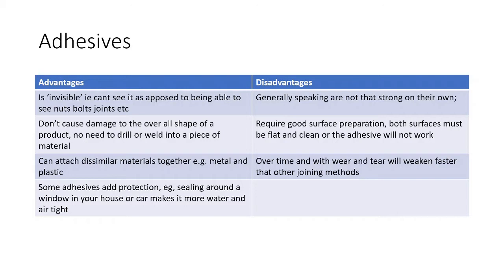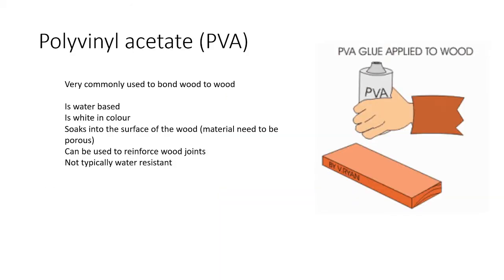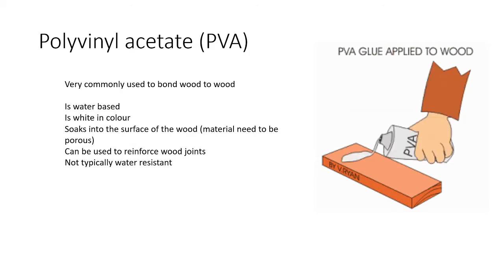Disadvantages: generally on their own adhesives are not that strong and are normally reinforced with something else. They require good surface preparation — the surface may need to be completely clean or slightly abraded to make it stick. Over time they do weaken from general wear and tear. There are generally two groups of adhesives: natural, derived from animal or vegetable extracts, and synthetic, which include things like epoxy resin.